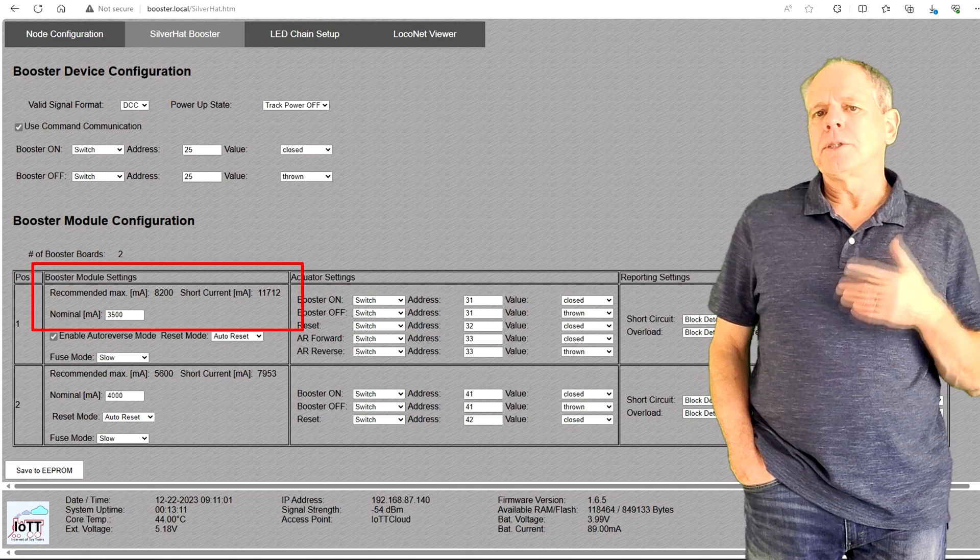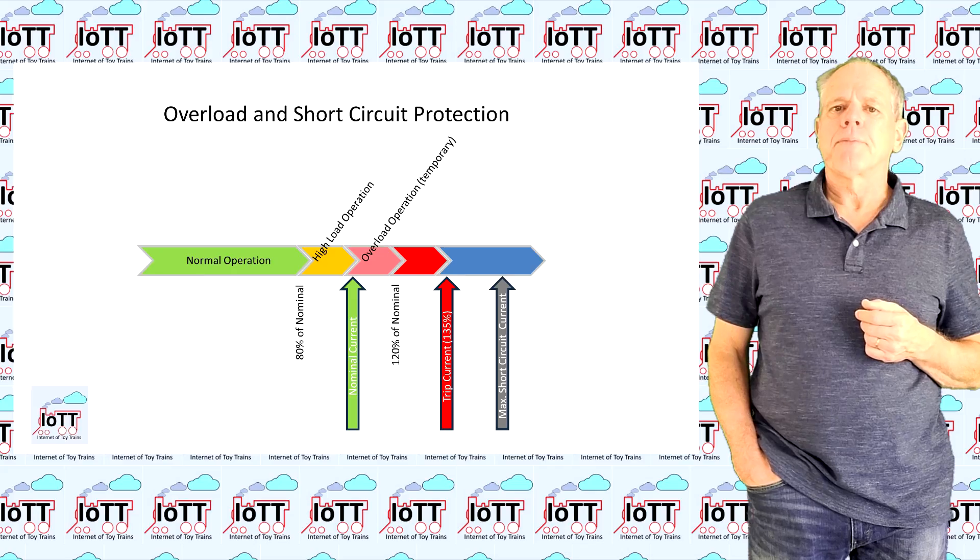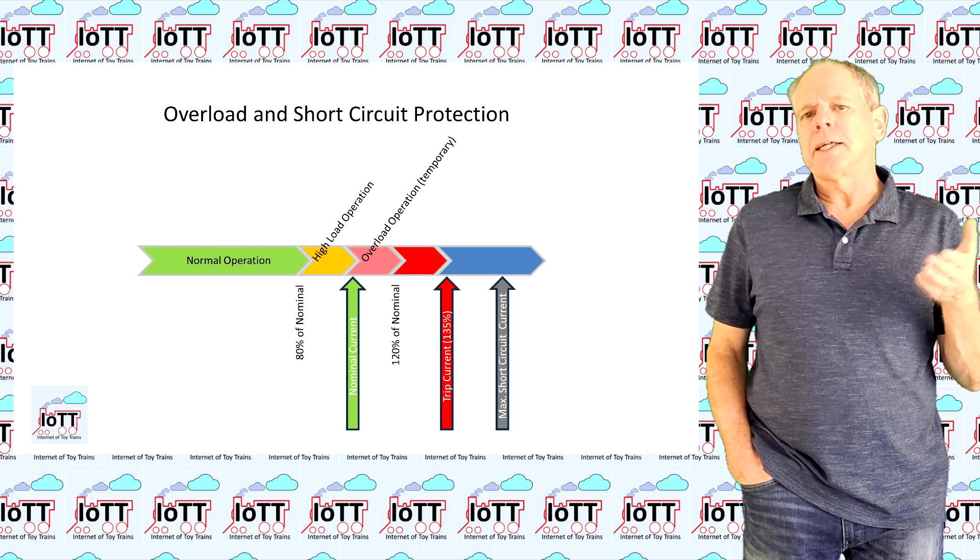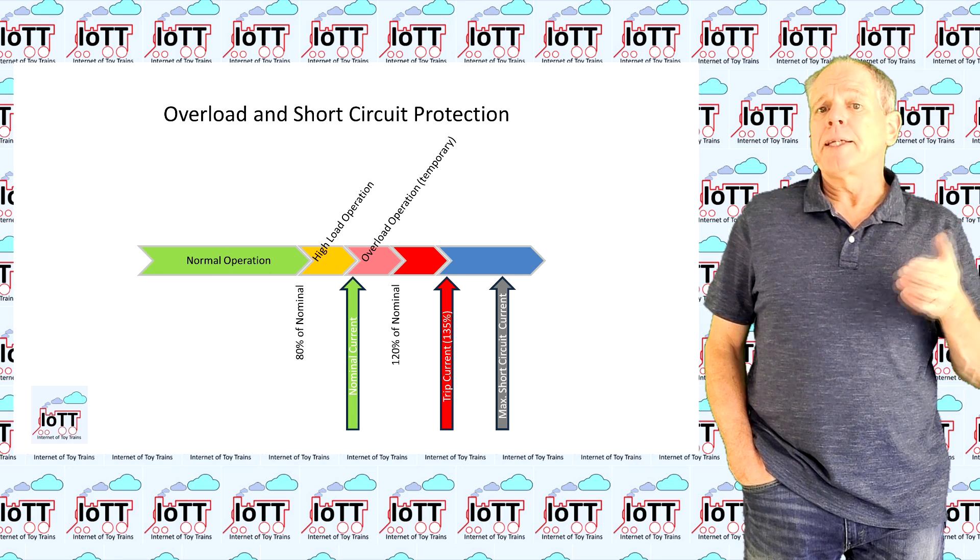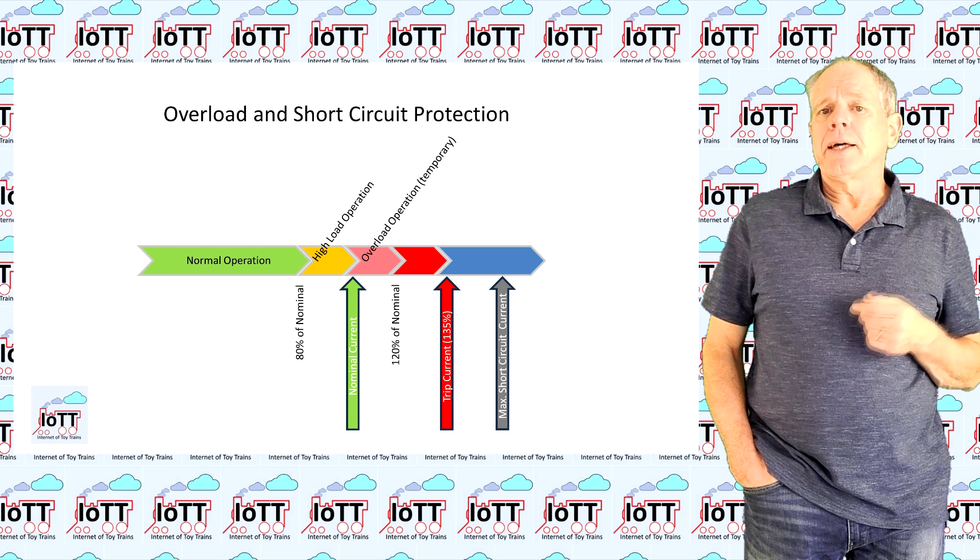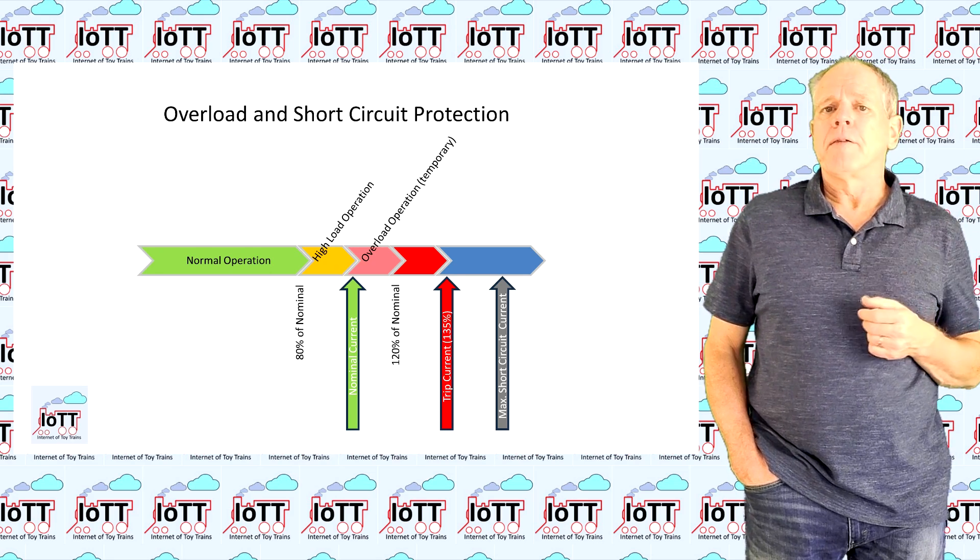For this test, I don't need that much, so I set it to 3.5A. Note that this value is the current that the booster is set to deliver continuously, not just the peak value that makes it trip. The latter is calculated internally and is set to 135% of the nominal value.